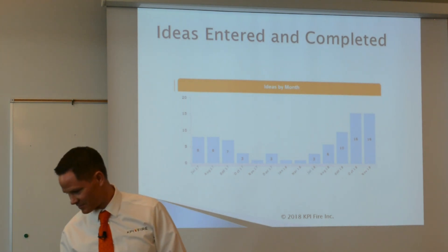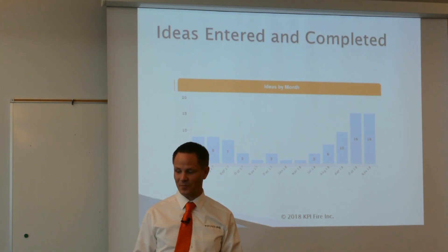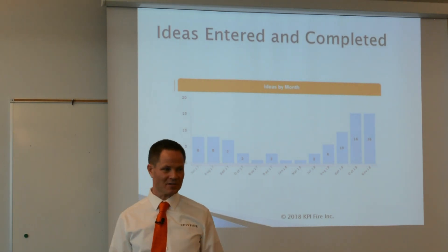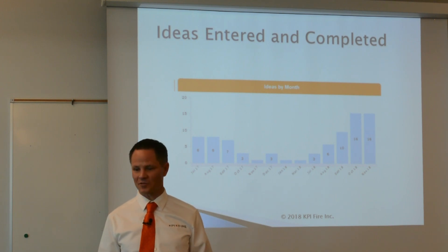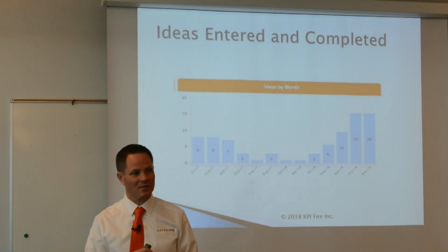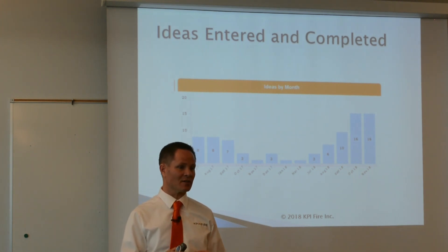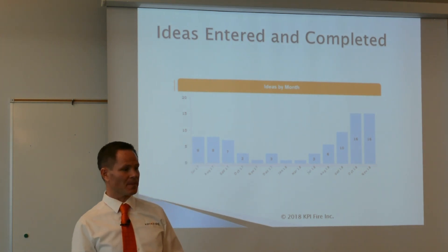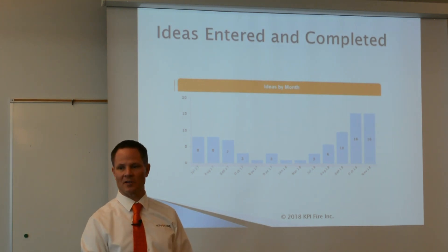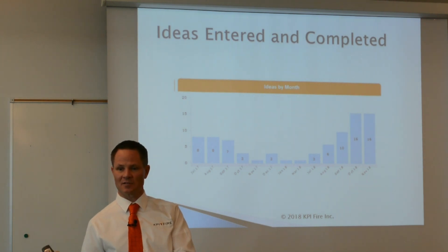A proper green belt training program should require participants to lead a project and show tangible results — that's the right way to do it. But the failure mode is when employees get trained and come back to work and there's no routine of continuous improvement — no daily huddle, no monthly accountability. All that training goes to waste because you have the skills but no rhythm. You have to create the regular routine: daily meetings, weekly project reviews, monthly report-outs.